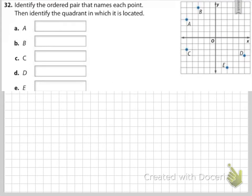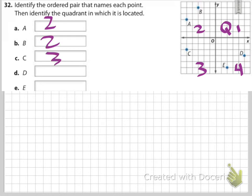Here are some more examples reviewing quadrants. Pause the video and test your knowledge. When you draw this, label Q1, Q2, Q3, and Q4. A is in quadrant 2, B is in quadrant 2, C is in quadrant 3, D is in quadrant 4, and E is in quadrant 4.